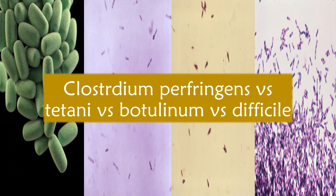Assalam and welcome everybody. Today we will be differentiating all the four species of Clostridia, which include Clostridium perfringens, Clostridium tetani, Clostridium botulinum, and Clostridium difficile. Before getting into the video, I'd like to tell you that these videos are meant for educational purposes. Things and treatments may change with time. If I get anything wrong or miss anything, your input is always welcomed in the comments section. Grab a pen and a notepad and let's get started.